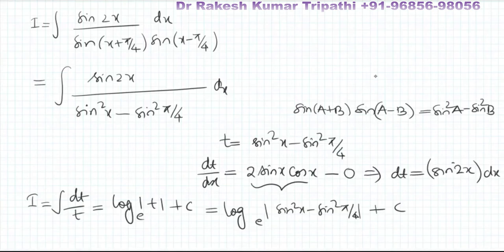Now again, if you wish to write sin²x - sin²(π/4) as earlier, it was written as sin(x + π/4) · sin(x - π/4). So finally, this is log|sin(x + π/4) · sin(x - π/4)| + C, which is the integration of the given function.